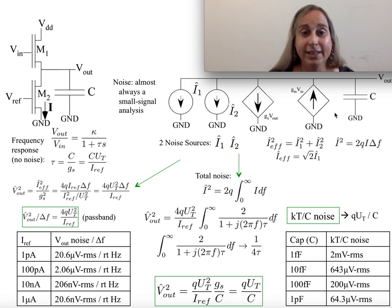If I look at the element without noise, I'm going to just get a gain of kappa plus one over tau s, where that tau is going to be C over gₘ, or if I'm thinking about it, it's going to be Cᵤₜ over Iᵣₑf.